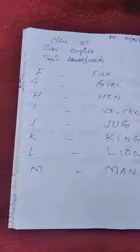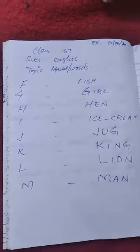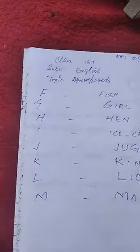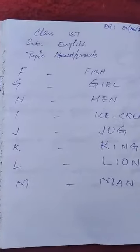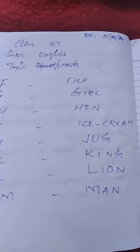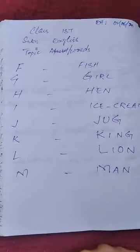The other part is H. H for Hen. Hen is a Murgi.